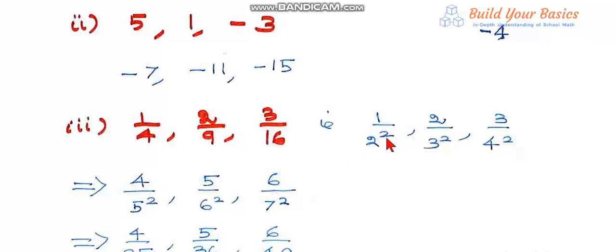Denominators: 2², 3², 4², so here it will be 5², 6², 7².